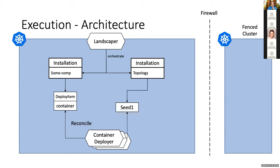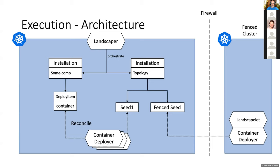For example, we imagine a Gardener-specific deployer — a controller that deploys, upgrades, and manages a deploy item of type Gardener. So you can easily extend the Landscaper with your own deploy items. Another example: a topology component that says 'I have these seeds in my installation — install them.' The specific deployer reconciles that and creates a seed. With this architecture, we can also operate behind a firewall: we post the deploy item in our base cluster, but in a fenced cluster — our seed cluster — we have another smaller Landscaper-lead with deployers that watch the original host cluster and create the fenced seed inside the fenced environment.